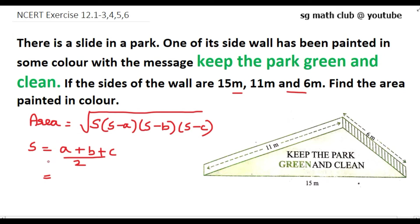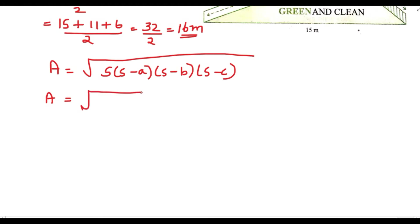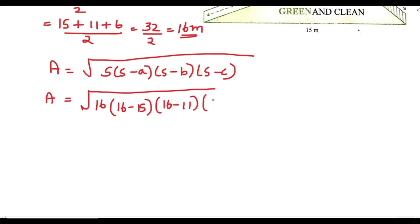So when we find the semi-perimeter: (15 + 11 + 6) divided by 2 is 32 by 2, which equals 16 meters. Now we find s − a, s − b, and s − c, which gives us the square root of 16 × (16 − 15) × (16 − 11) × (16 − 6).